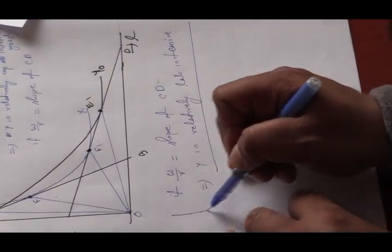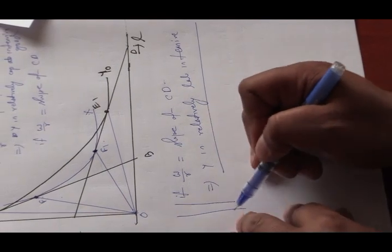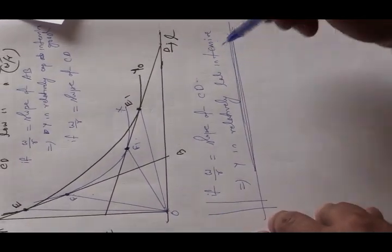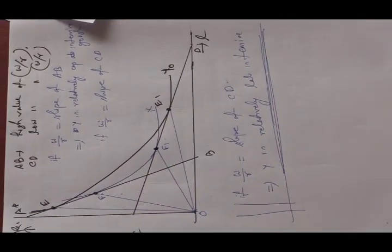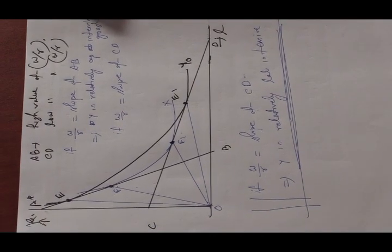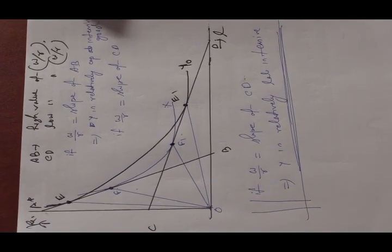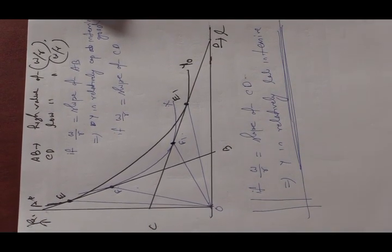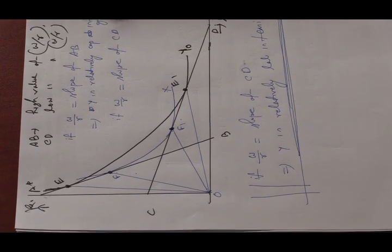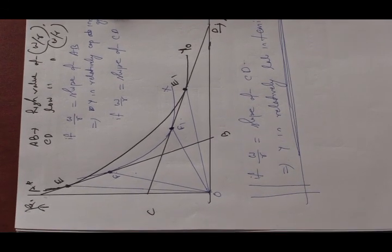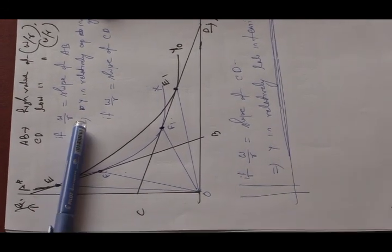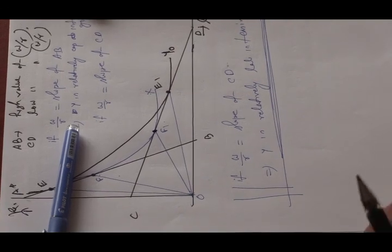In this case, we cannot rank any commodity unambiguously as per factor intensity. The ranking of commodities by factor intensity depends on the prevailing factor price ratio, which is the essence of factor intensity reversal.